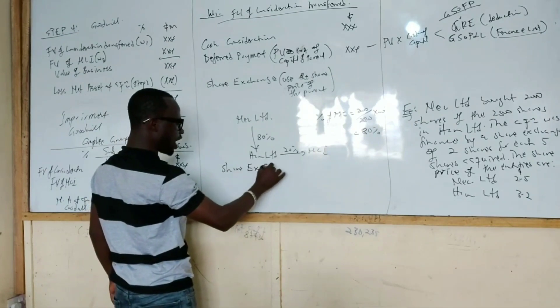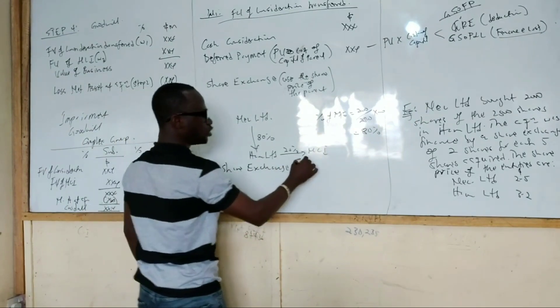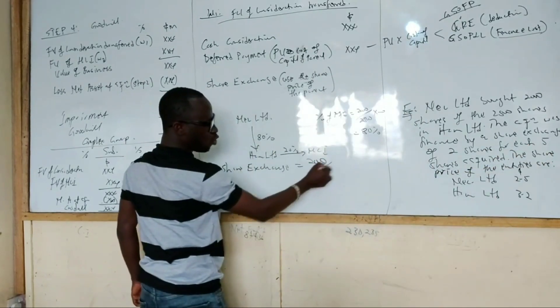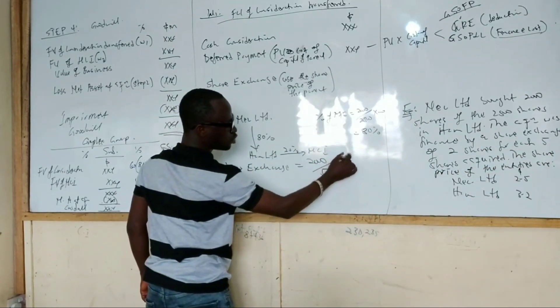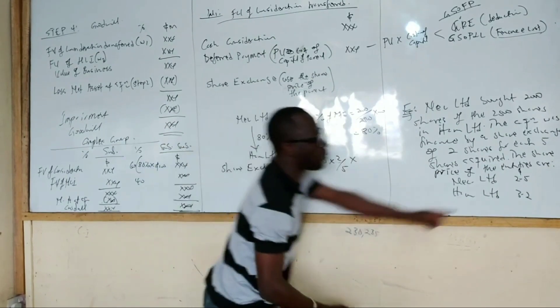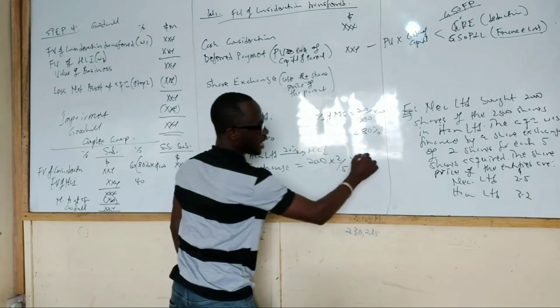If they are doing share exchange, it will be 2,000. We give you two for every five. So it will be 2 over 5 times 2. I can just do 2 over 5 like this, times the share price of the parent company, NEC. Does it make sense?